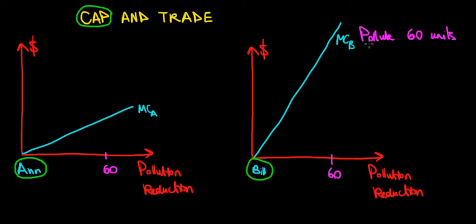How do we pollute those units? By having permission to do so — meaning we literally have 60 permits. Whoever holds a permit is allowed to pollute.